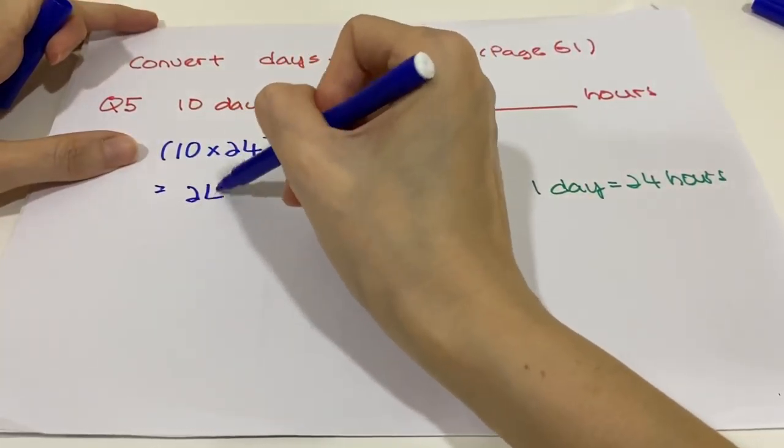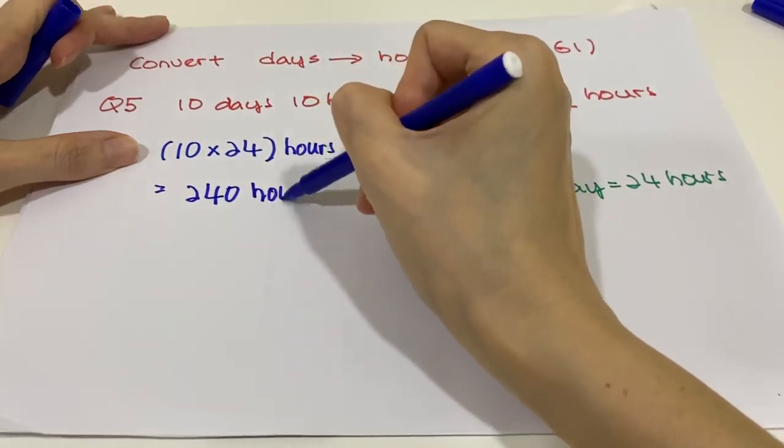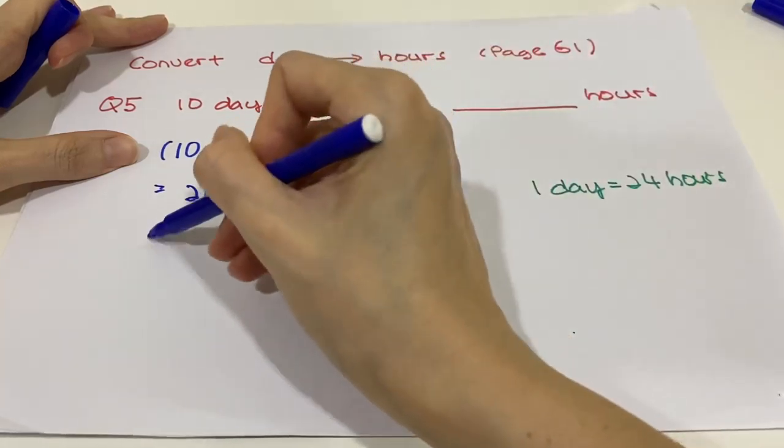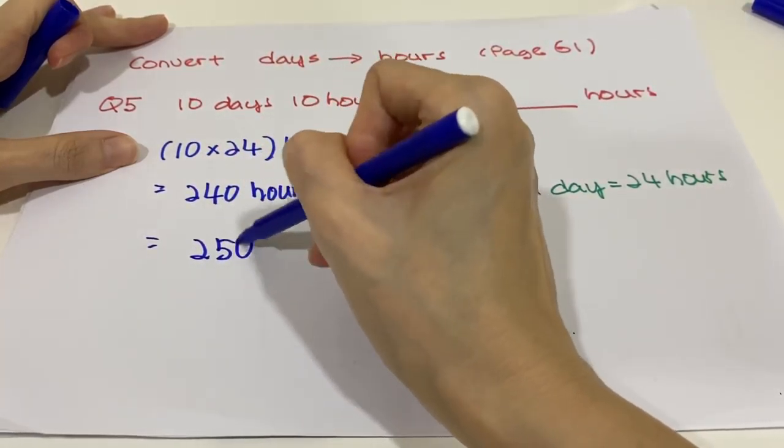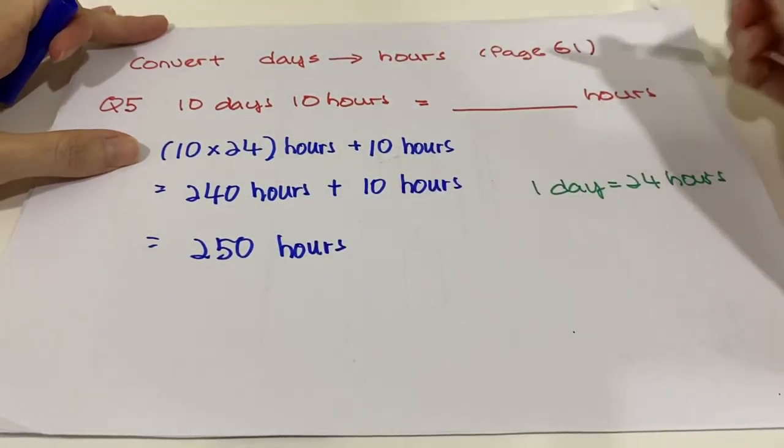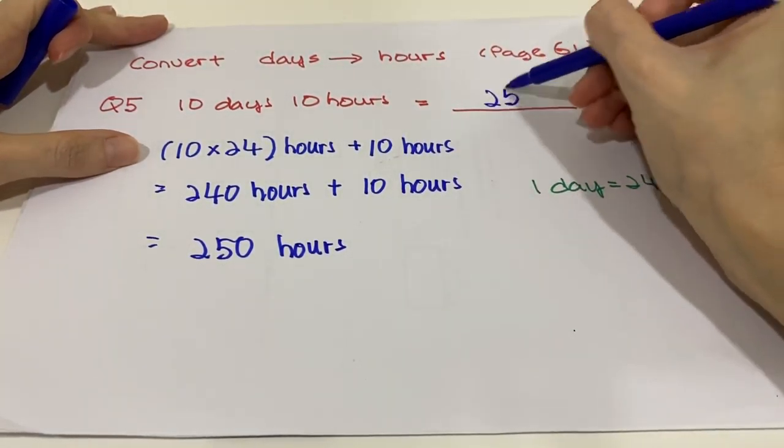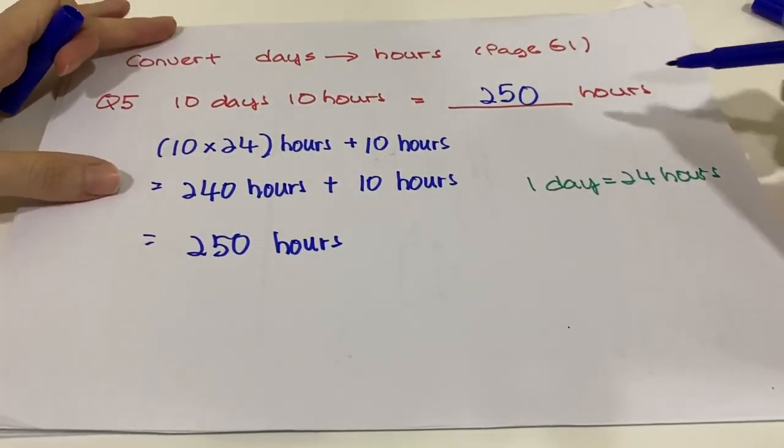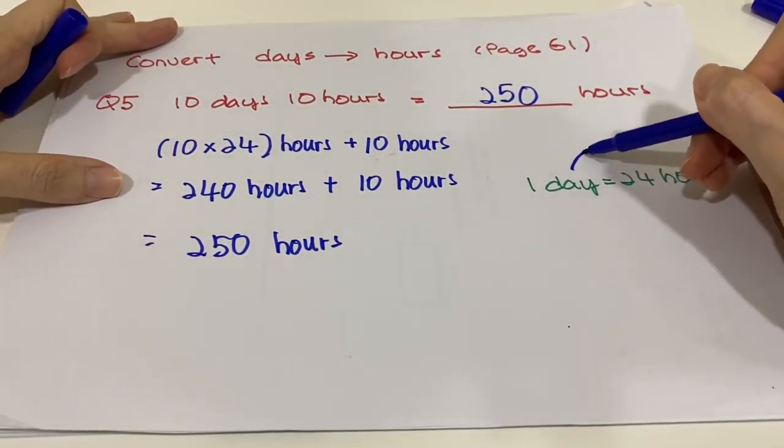10 times 24, we will have 240 hours plus the 10 hours, so total we will have 250 hours. So the answer for this question is 250 hours. We can say that if we want to convert days to hours, we can do times.